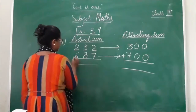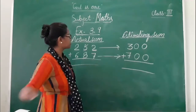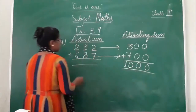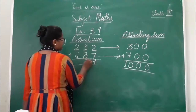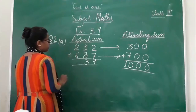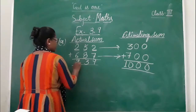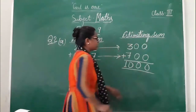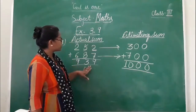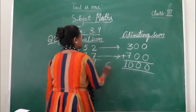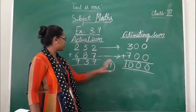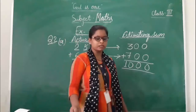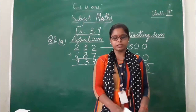Now we add. For the actual sum of 252 plus 687: 7 plus 2 is 9, 8 plus 5 is 13, carry 1, 6 plus 2 plus 1 is 9. So the actual sum is 939. The estimating sum is 1000. The difference is 61 numbers. Estimating sum is 1000 and actual sum is 939.